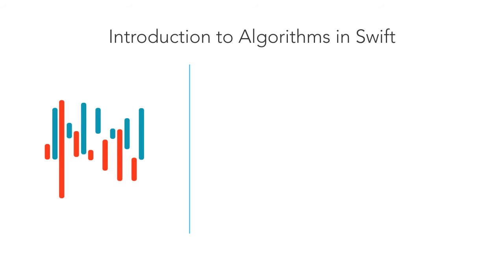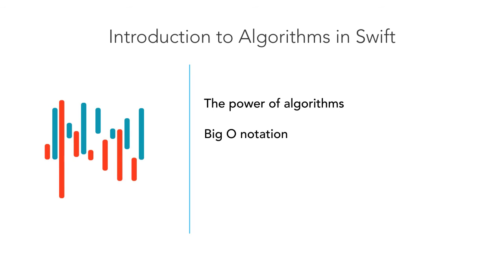Alright, so here are the main topics. First, I'm going to show you the power of algorithms. We'll compare simple, unoptimized samples with ones which rely on algorithms. If you had any doubts about the importance of algorithms, these examples are going to convince you. Next, we'll talk about the big O notation, which is a mathematical model for measuring and classifying algorithms.